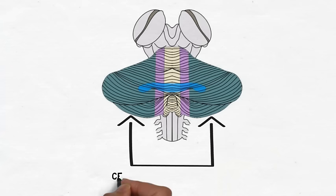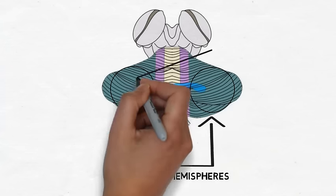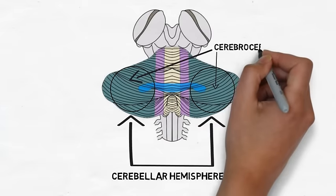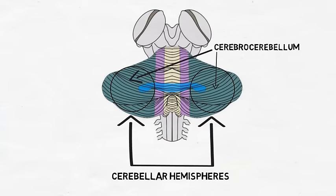The cerebellum consists of two cerebellar hemispheres and can be divided into three parts. The cerebrocerebellum receives input from the cerebral cortex and is involved with planning and initiating movements.